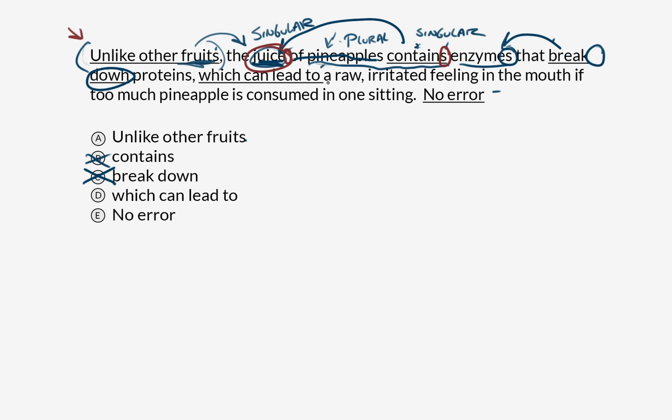And then we've got which can lead to, which is referring back to basically the breaking down of proteins. And we've got this comma here, which isn't underlined, which is good because that tells us the word which usually follows commas. What this whole thing here that I'm underlining, that I'm bracketing in red, is a relative clause. And that's set off by which, which is appropriately following a comma. So I'm going to say this is not an error.